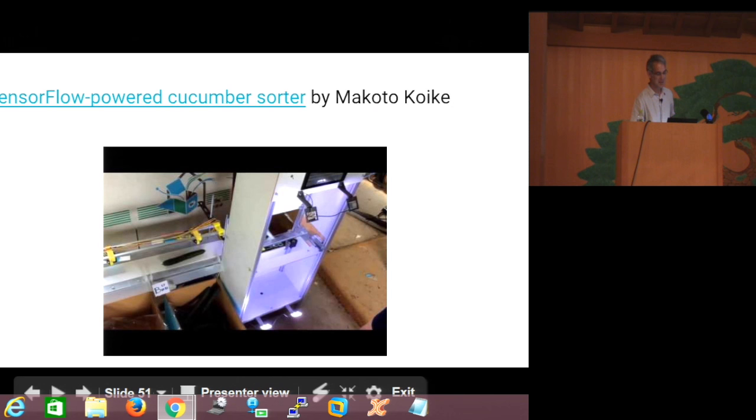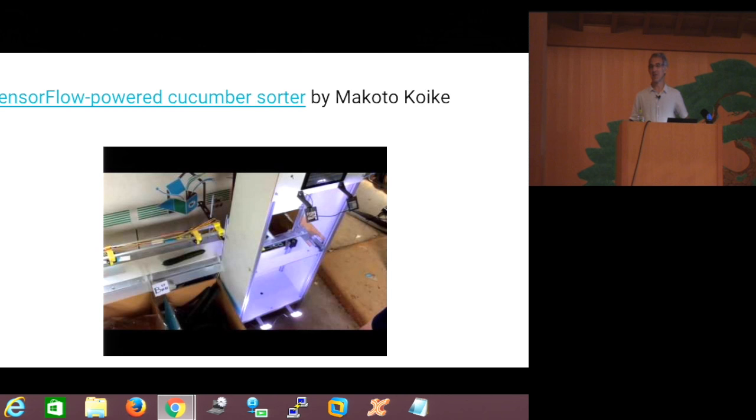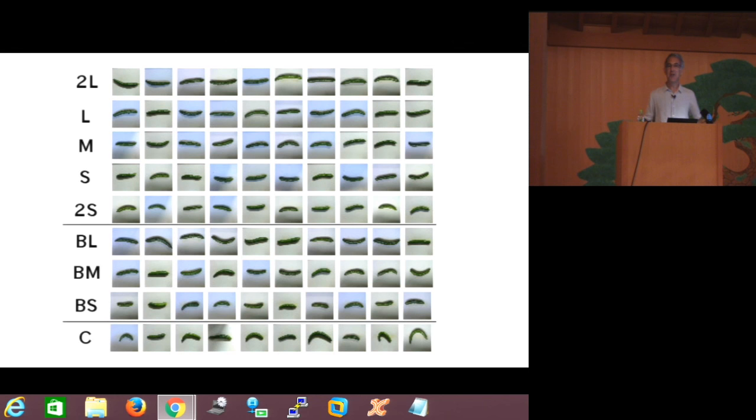All right, so I'm going to leave you with some homework. After this, you can go to YouTube and watch the cucumber sorter in action. It's quite amazing. And there you go. He classifies cucumber into his nine categories. The training set was not very large, so there is some indication that the model is overfitting a little bit. Still, it's very nice that someone can do this.